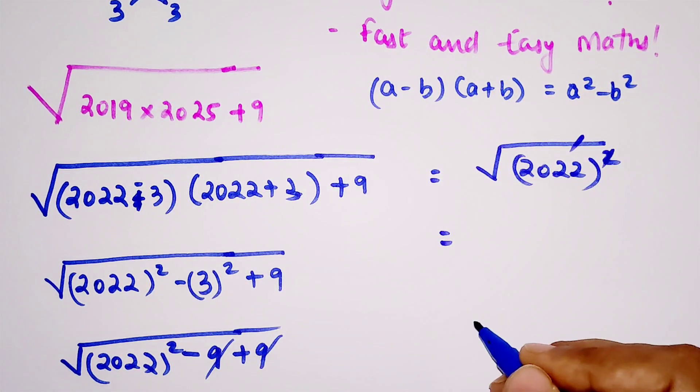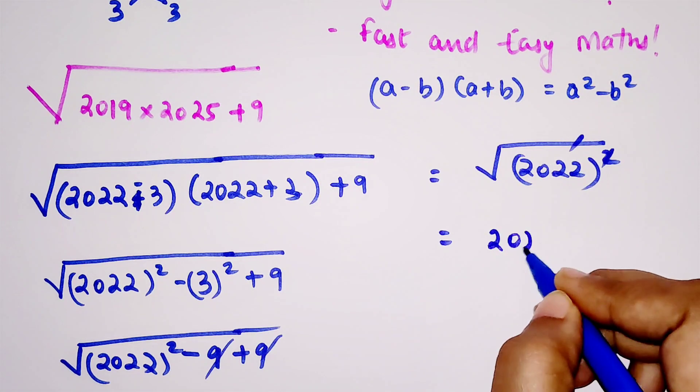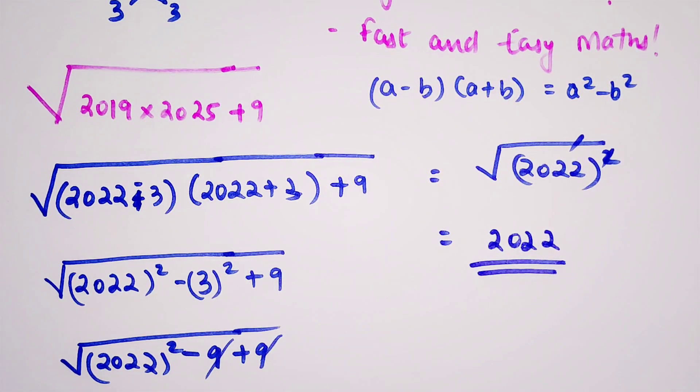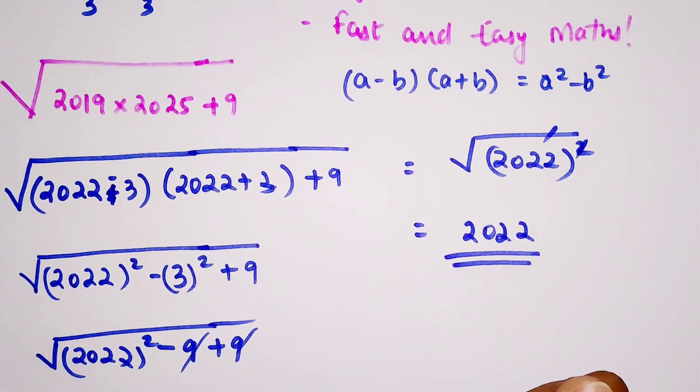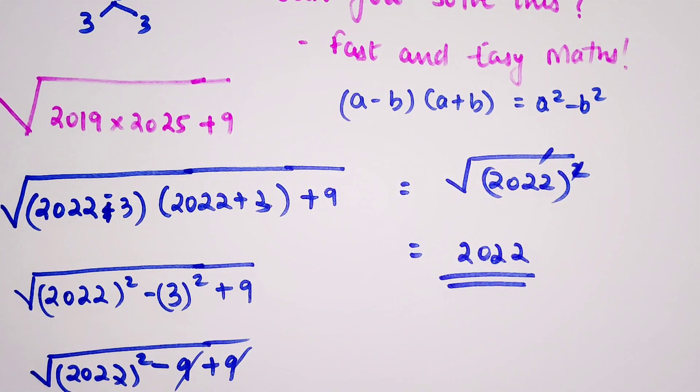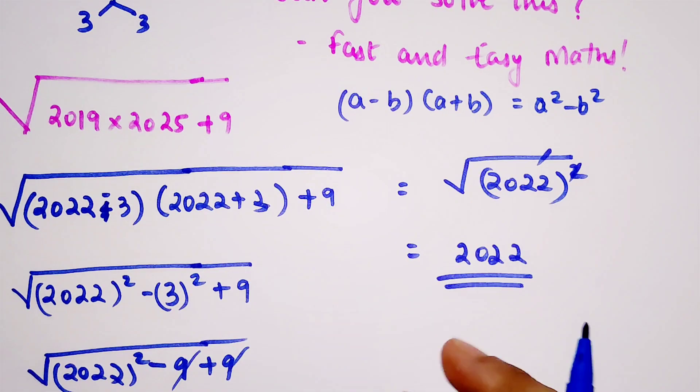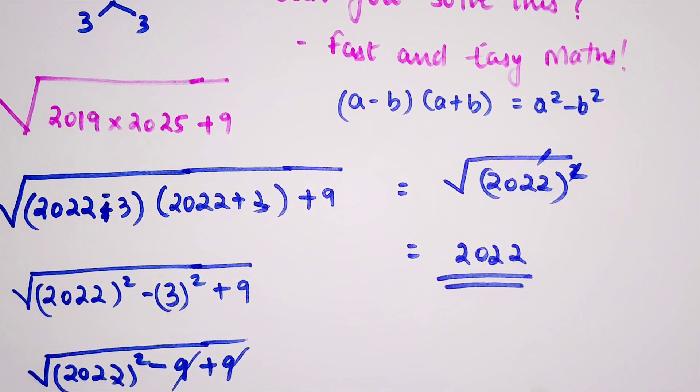The square and square root cancel, so the answer to this one is 2022. Students, don't forget to subscribe to my channel for many such math-related videos. You can also share these videos with your friends and see if they can understand the trick behind these questions.